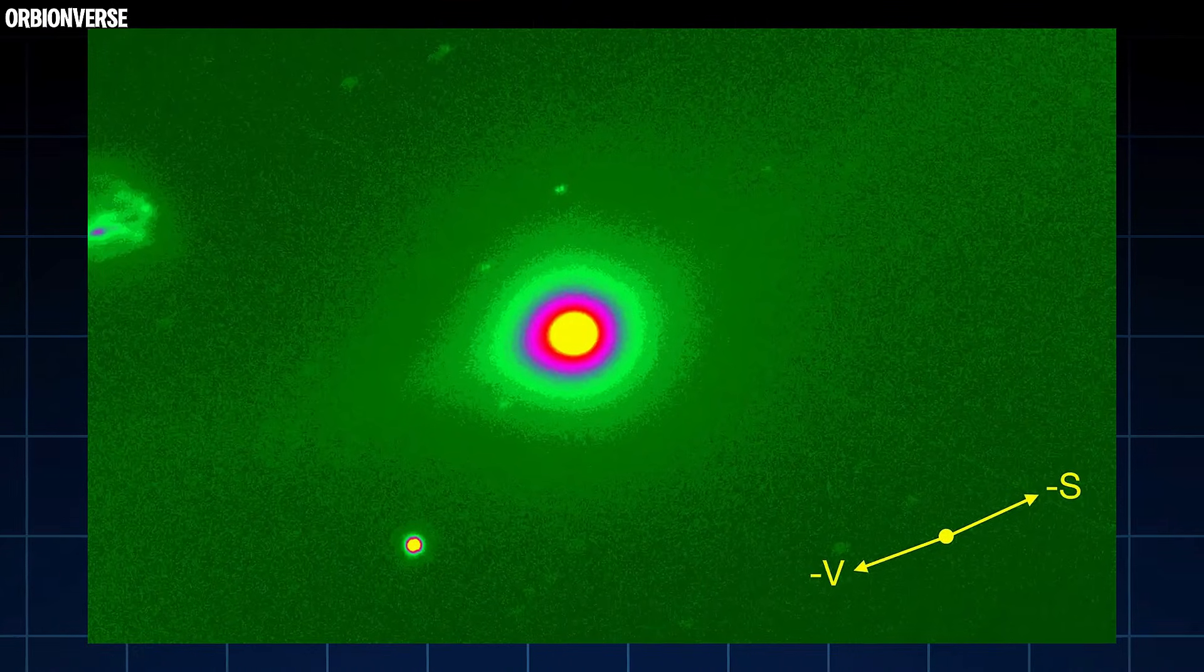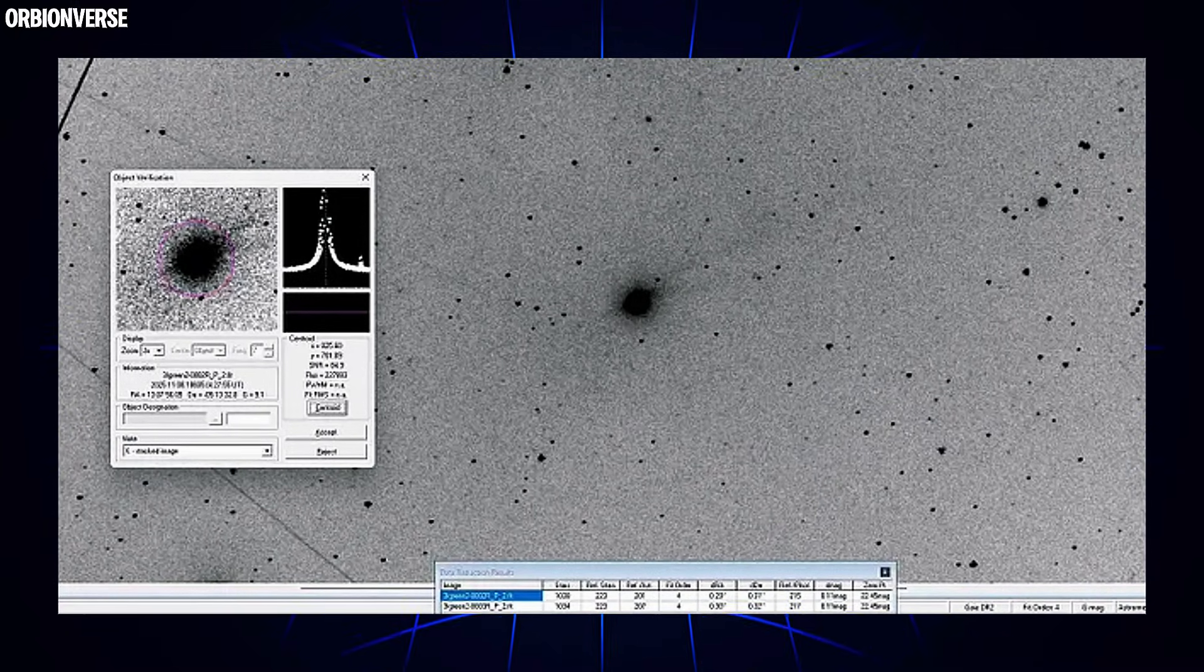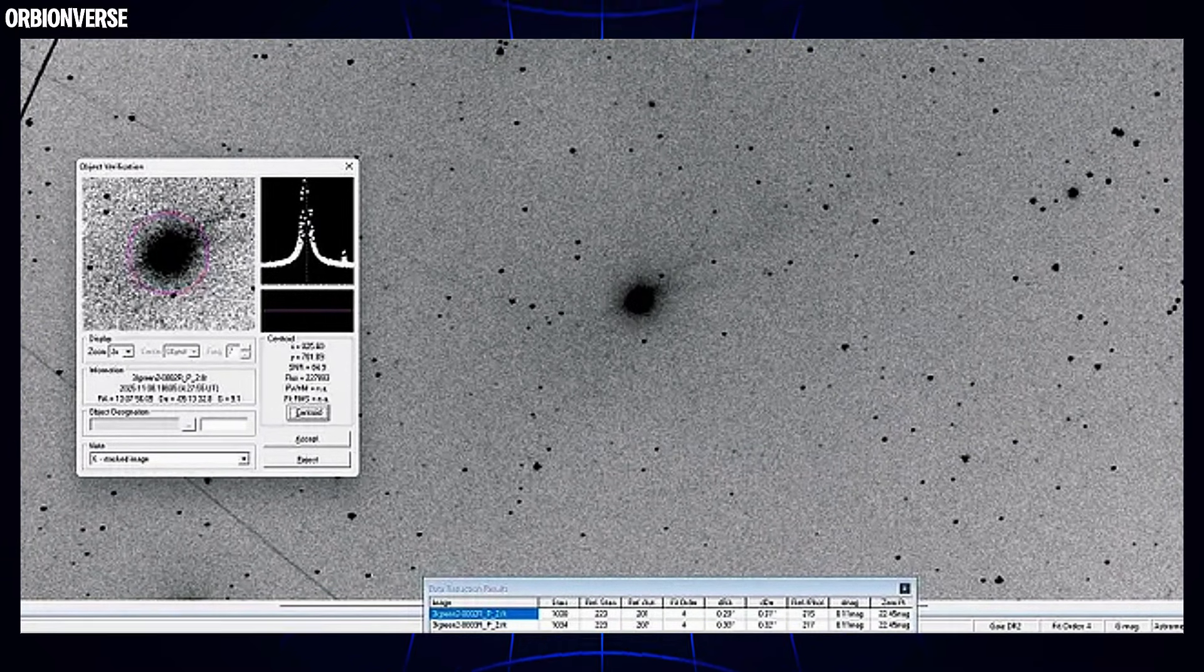That means the visible surface we're looking at is smaller, unless there are dark regions the instruments can't detect. And that opens a whole new set of questions no one seems ready to answer.